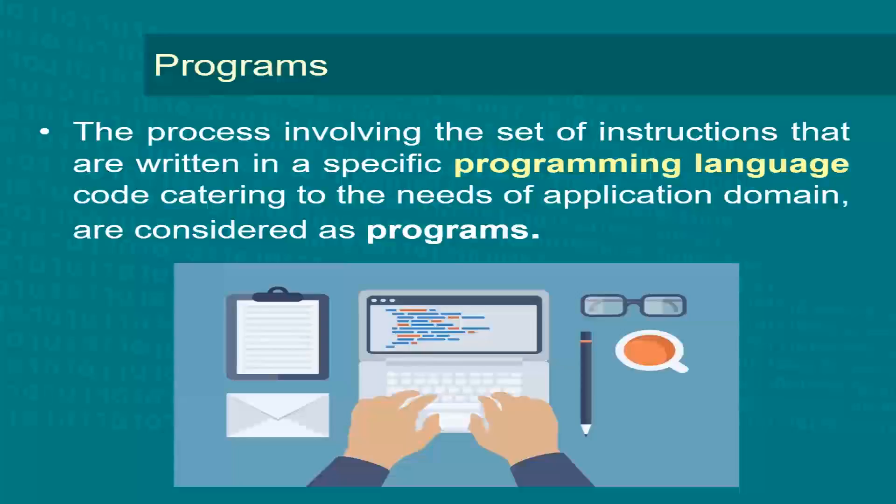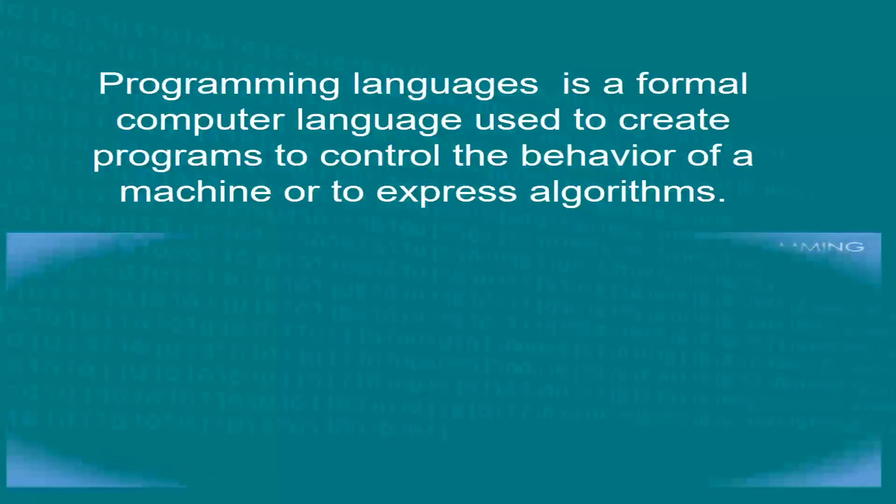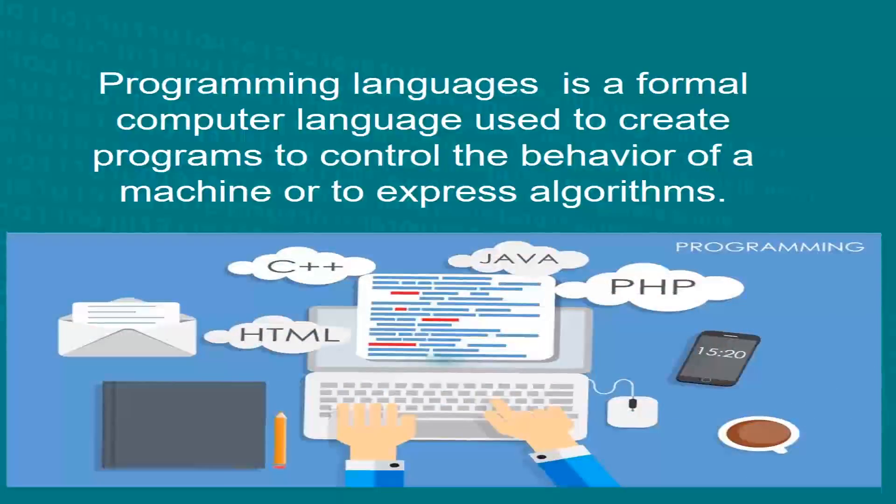Next, coming towards programming. Programming is a process involving a set of instructions that are written in a specific programming language code that are catering to the needs of an application domain. Hence, a programming language can be defined as a formal computer language designed to create programs to control the behavior of a machine or to express algorithms. This was all about algorithms, flowcharts, pseudocode and programming language.